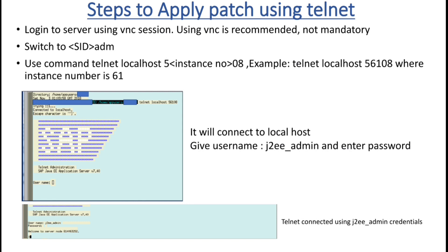The standard command for telnet is to telnet your localhost with the port format: five, then the instance number, then zero. This is standard across all Linux platforms. For example, if the instance number is 61, the command is: telnet localhost 56108. As you can see in the screenshot, once you connect to localhost, you enter the password for your J2EE admin. If the credentials are working, the telnet session is connected.